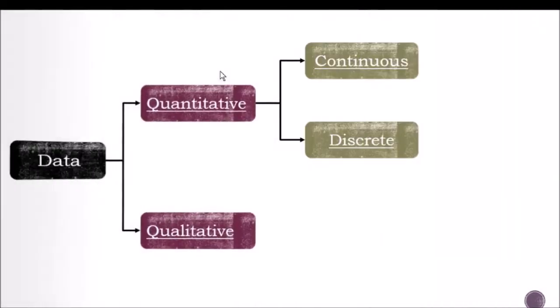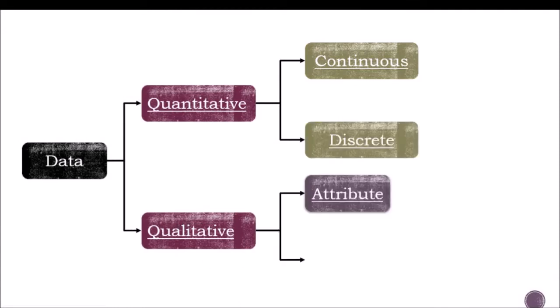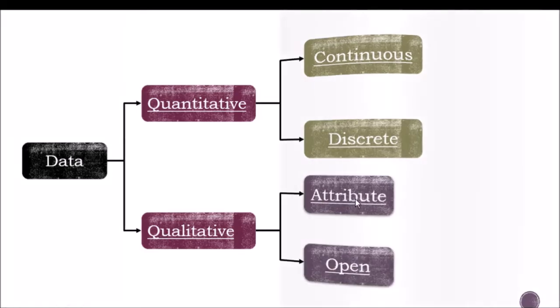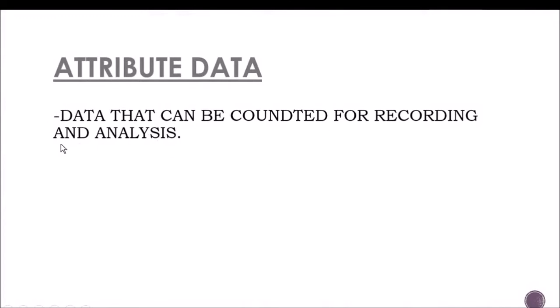In qualitative data, it is also divided into two: attribute and open. Attribute data is data that can be counted for recording and analysis. For example, the criteria for the height of a person — tall, small — or the size of a t-shirt: small, medium, large, extra large, double XL, triple XL. That is attribute data — it can be counted and recorded for analysis.